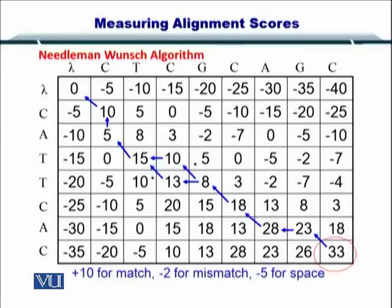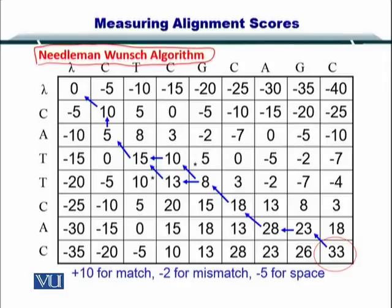Let's review what we did in the Needleman-Wunsch algorithm. This algorithm was a global alignment strategy and it helped us to start from the last element in the matrix and move to the first element. The important thing to note here is that we used a plus 10 for a match, a minus 2 for a mismatch, and a minus 5 for a gap penalty.